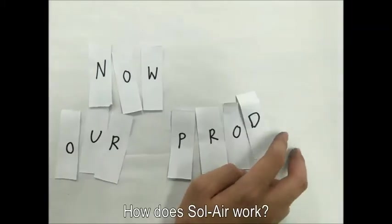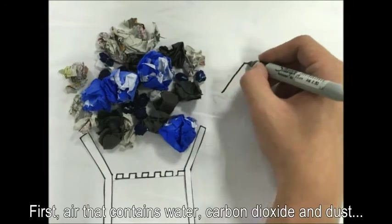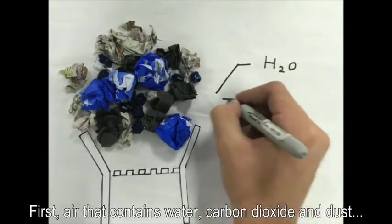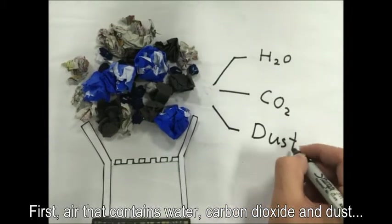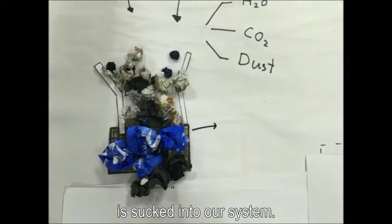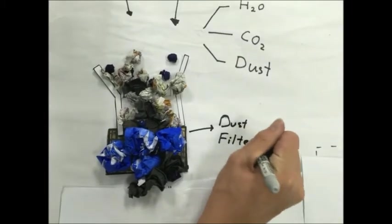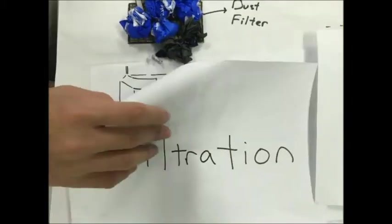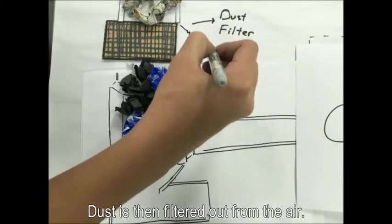For our product, how does Sol-Air work? First, air that contains water, carbon dioxide, and dust is sucked into our system where it is brought through a dust filter. Dust is then filtered out from the air.